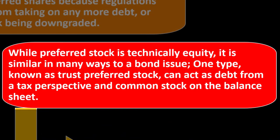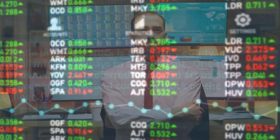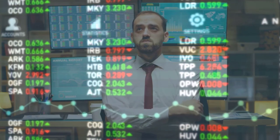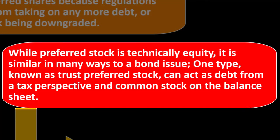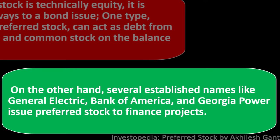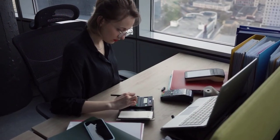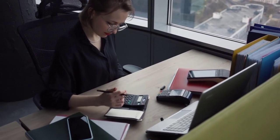If a company can't take on more debt, they might use an equity instrument that is close in structure to debt — which would be preferred stock. While preferred stock is technically equity, it is similar in many ways to a bond. One type, known as trust preferred stock, can act as debt from a tax perspective while appearing as common stock on the balance sheet. On the other hand, established companies like General Electric, Bank of America, and Georgia Power also issue preferred stock to finance specific projects.